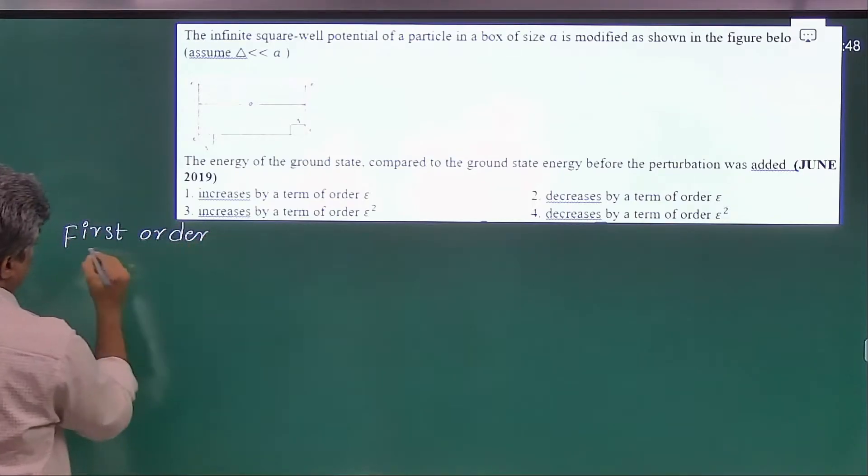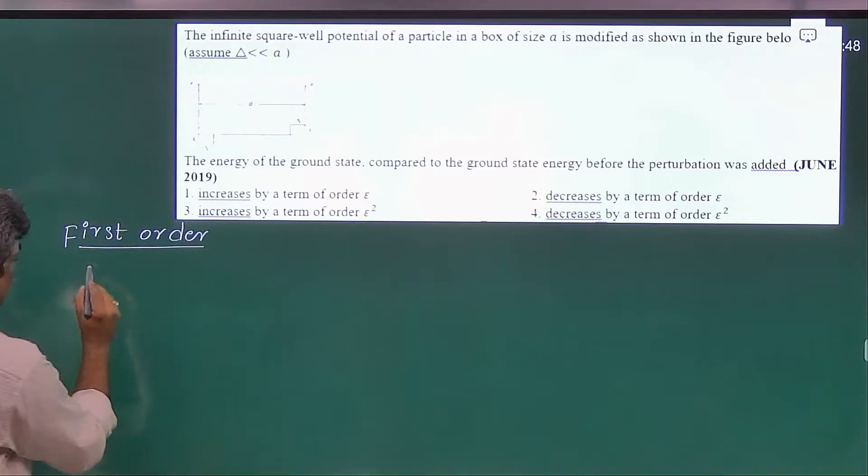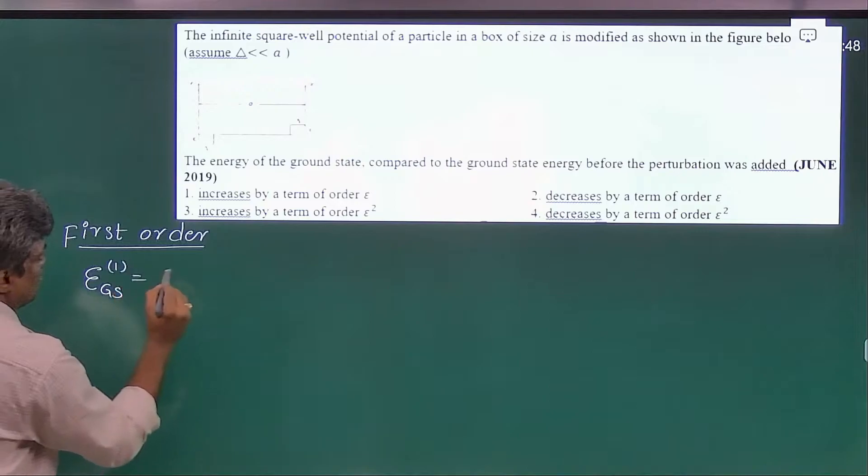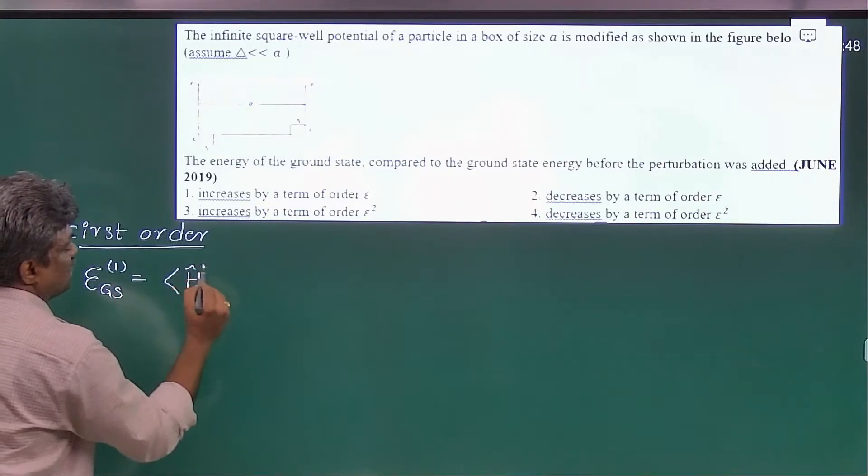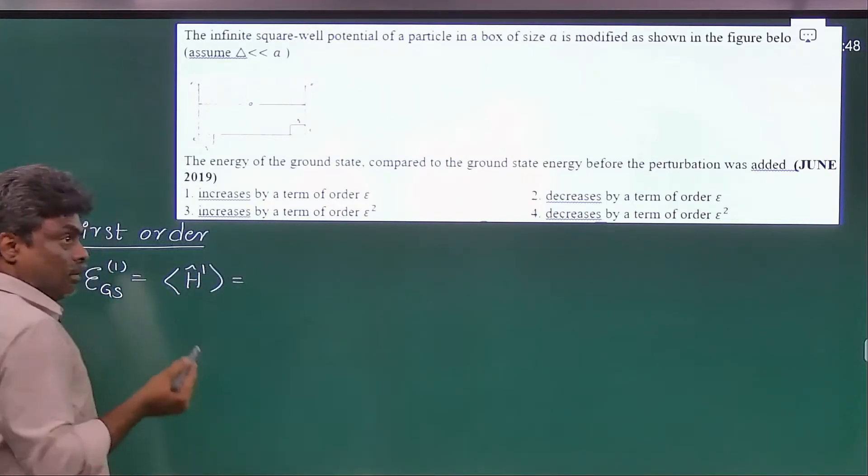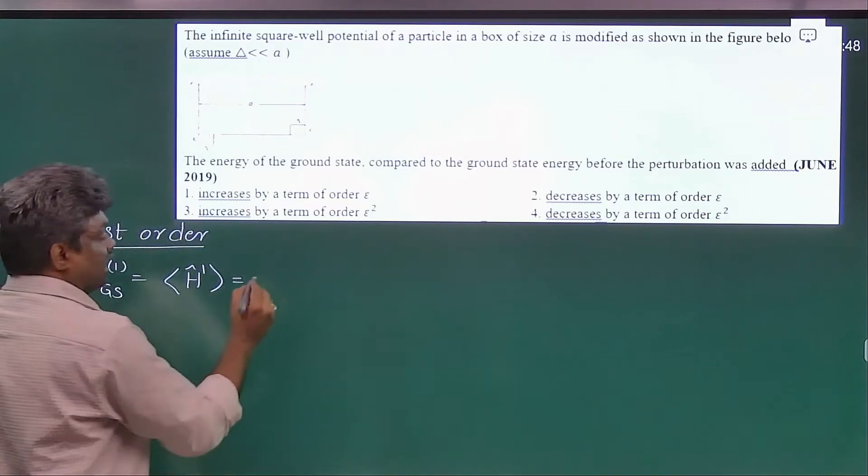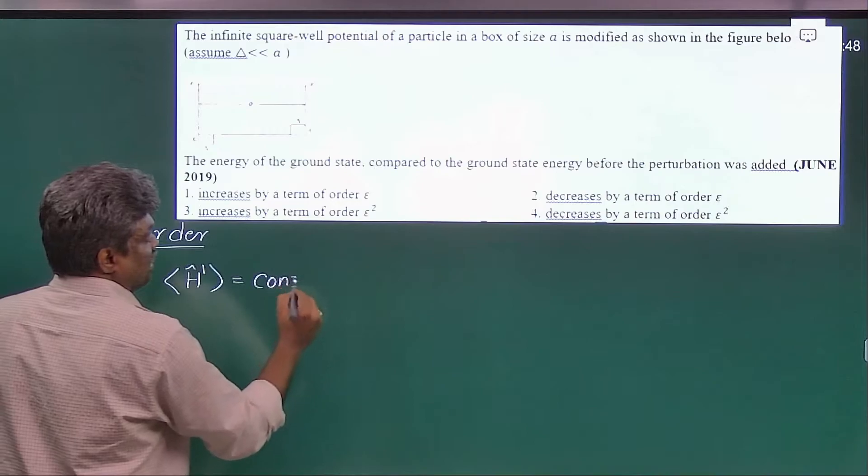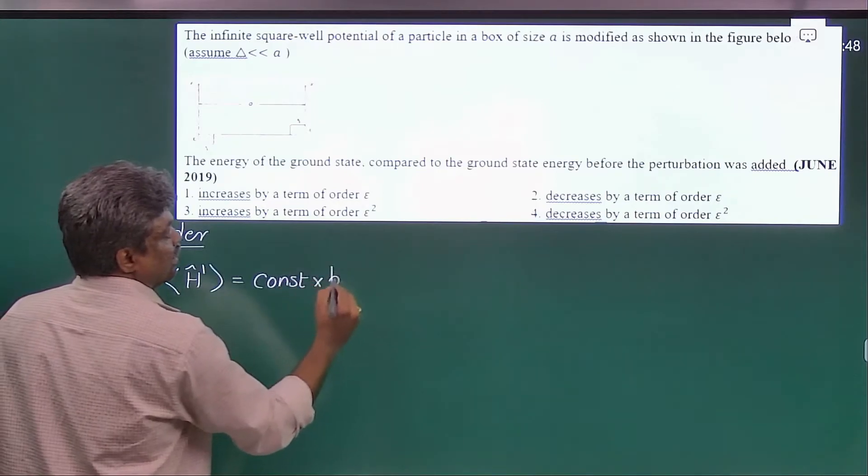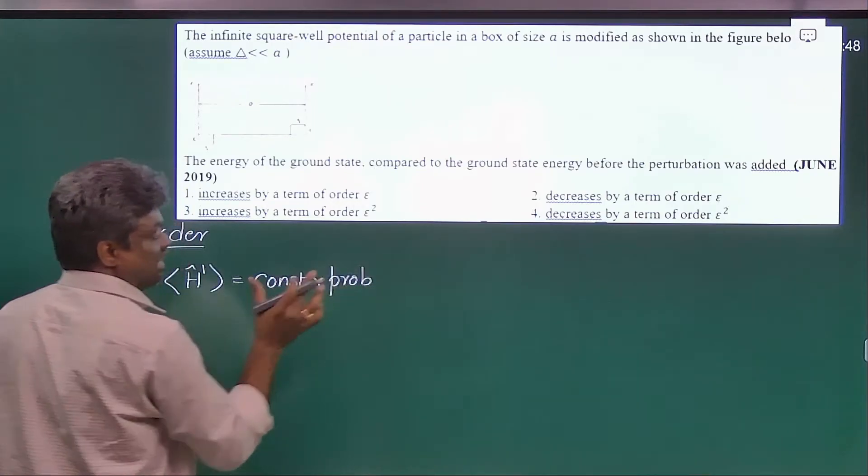The first order correction to the ground state energy - this is the ground state. The first order correction is given by simply the expectation value of H prime. Whenever your H prime is a constant, we have a small technique: directly we can find that constant times the corresponding probability in the region.